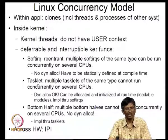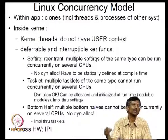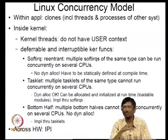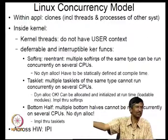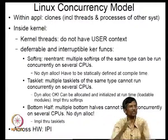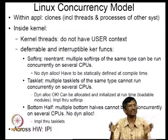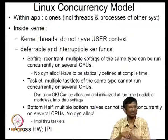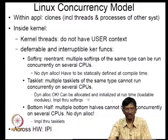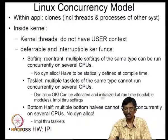Then came tasklets: multiple tasklets of the same type cannot run concurrently on several CPUs, but different types — disk on one CPU, tape on another, networking on another — can run simultaneously since they usually do not interact. Tasklets support dynamic allocation and provide a more flexible model.